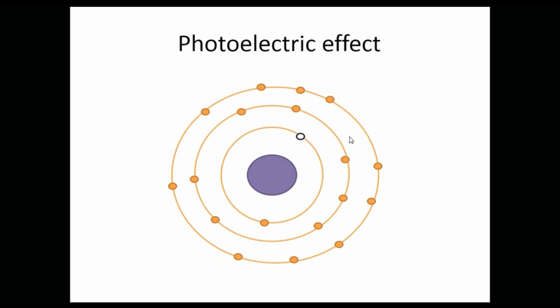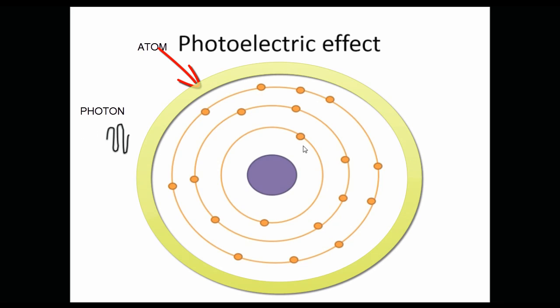Now how this photoelectric effect takes place, I will explain one by one. Now basically what is happening in this is that in photoelectric effect, this whole thing is called the atom.